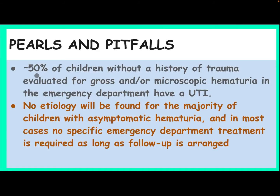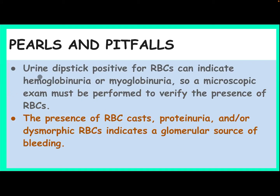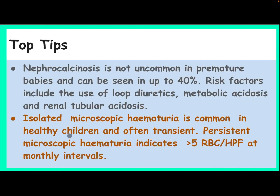Pearls and pitfalls: About 50% of children without a history of trauma evaluated for gross and/or microscopic hematuria in the emergency department have a UTI. No etiology will be found for the majority of children with asymptomatic hematuria, and in most cases no specific emergency department treatment is required as long as follow-up is arranged. A urine dipstick positive for RBC can indicate hemoglobinuria or myoglobinuria, so microscopic exam must be performed to verify the presence of RBCs. The presence of RBC casts, proteinuria, and/or dysmorphic RBCs indicates a glomerular source of bleeding.